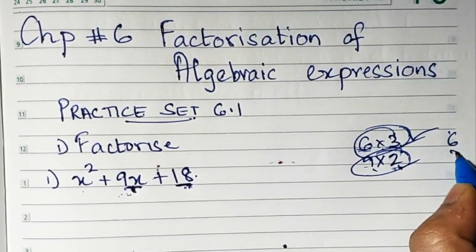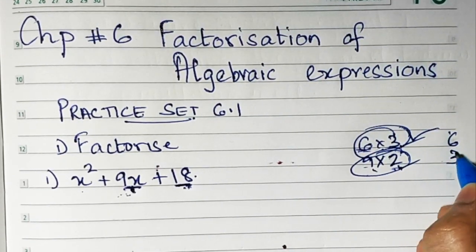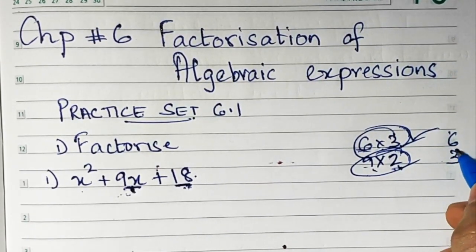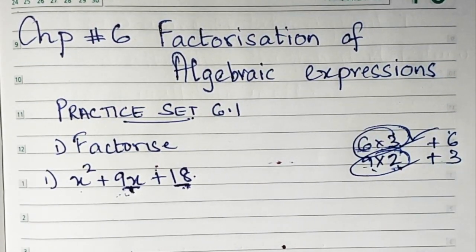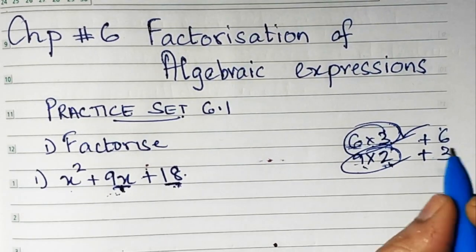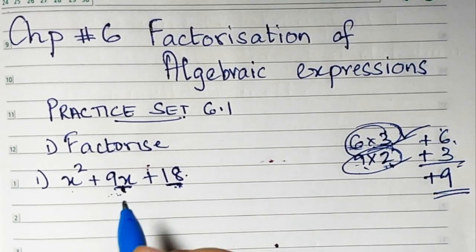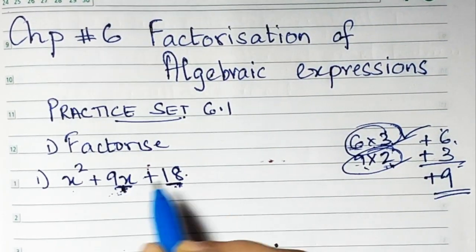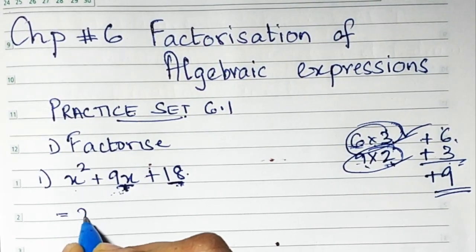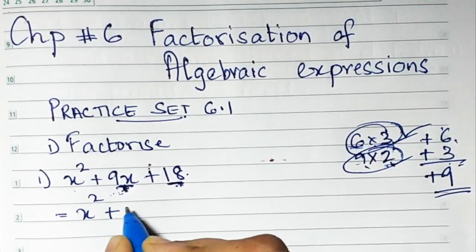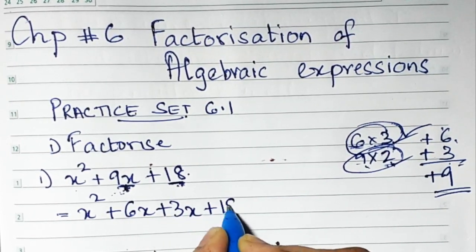So I take 6 and 3. Now to see which signs — if I put minus and plus I'd have to subtract, so I'll put plus and plus both ways. So 6 plus 3 is 9, positive sign. I'll take plus 6 and plus 3. So I'm going to split the middle term 9x as 6x plus 3x.